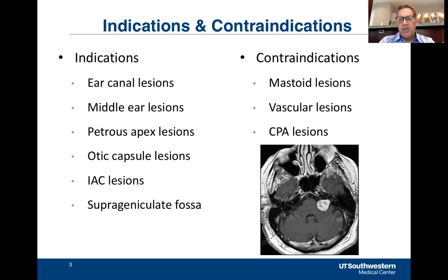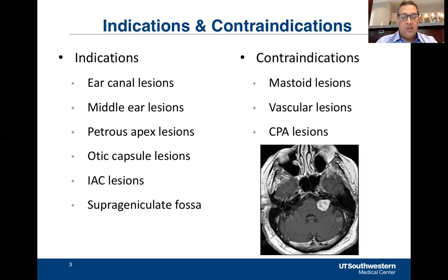Cerebellopontine angle extension is, in my mind, a contraindication for using a minimally invasive approach. This MRI demonstrates a vestibular schwannoma that's medium-sized but has a fairly large contact surface with the brainstem. Approaching this through a transcanal approach does not allow you adequate control of the PICA, AICA, and potentially the vertebral arteries and various veins that traverse the cerebellopontine angle. Your ability to control those structures is very limited with a transcanal approach, and I do not consider these favorable for a transcanal approach.